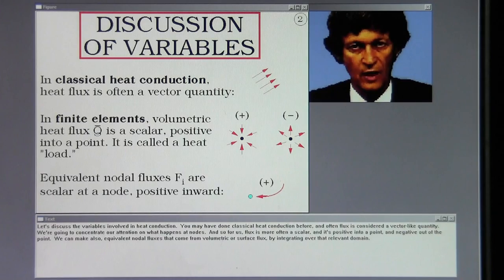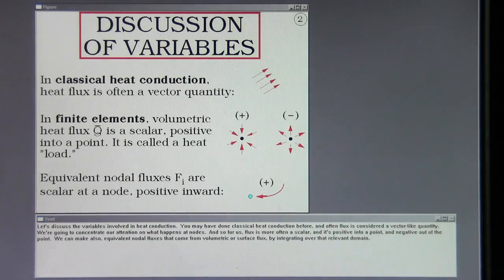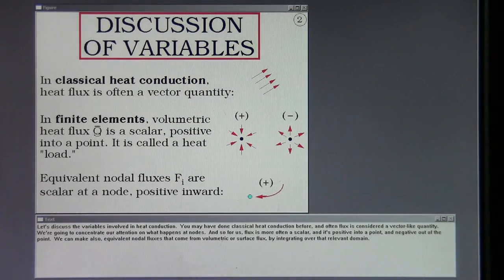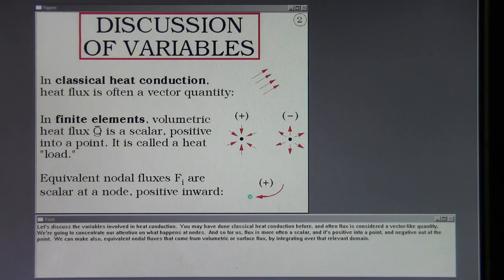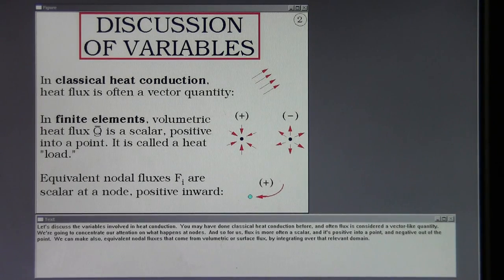Let's discuss the variables involved in heat conduction. You may have done classical heat conduction before, and often flux is considered a vector-like quantity. We're going to concentrate our attention on what happens at nodes, and so for us, flux is more often a scalar - positive into a point and negative out of the point. We can make equivalent nodal fluxes that come from volumetric or surface flux by integrating over that relevant domain.